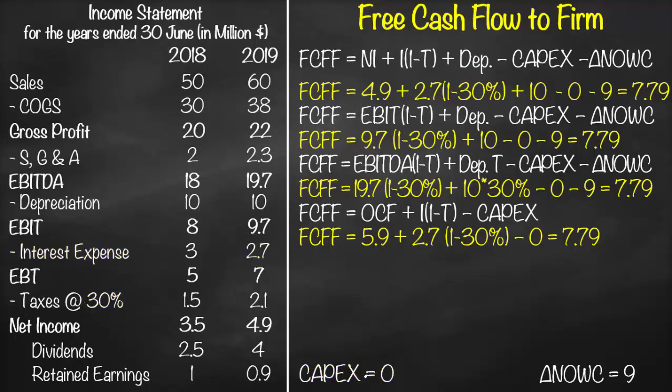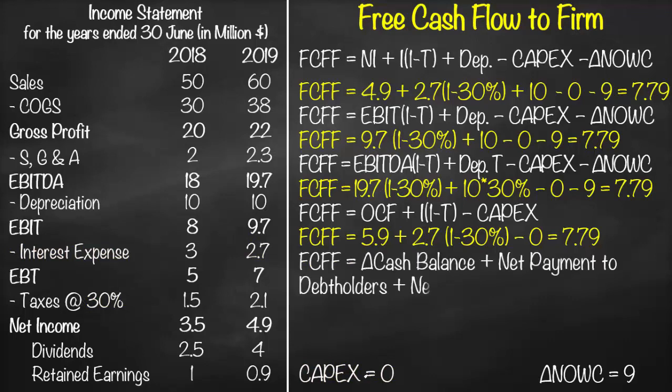A fifth formula is: FCFF = Change in Cash Balance + Net Payment to Debt Holders + Net Payment to Shareholders. This works because free cash flow to firm is the cash available to both creditors and shareholders. The change in cash balance is the net cash flow, which is the sum of net cash flow from operations, investment, and financing.